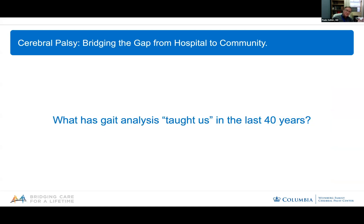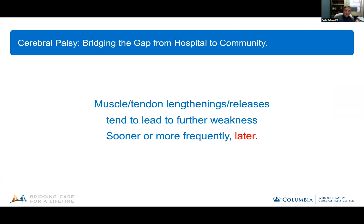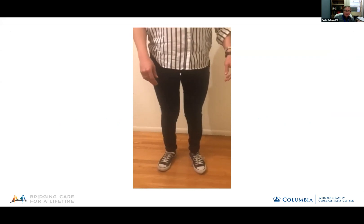What has gait analysis taught us over the last 40 years? The first important thing is that when we lengthen muscles and tendons, what we may be doing is essentially increasing the muscle weakness that these patients already have. Sometimes this muscle weakness, produced through aggressive or premature muscle lengthenings, doesn't show immediately — it shows later.